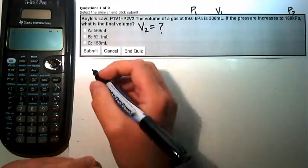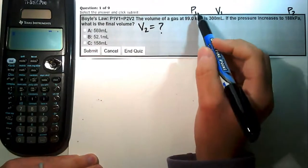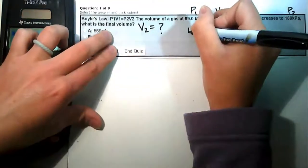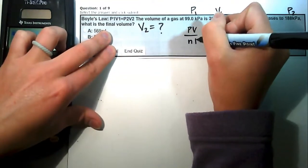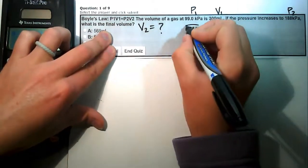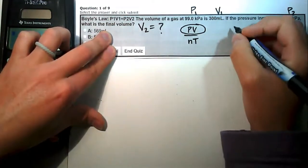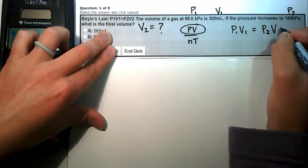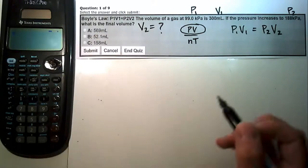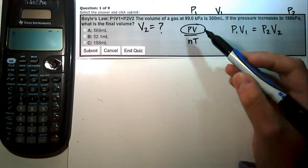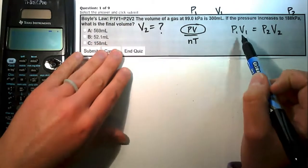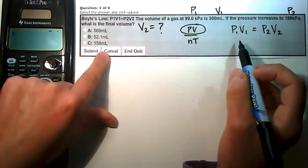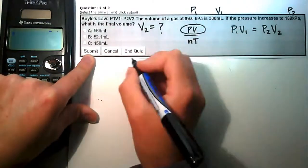We need an equation with two pressures and two volumes. Looking at the general gas law PV/nT, we only need P and V here, so we use P1 times V1 equals P2 times V2. Even if we don't remember this is called Boyle's law, we know this is the equation we need.